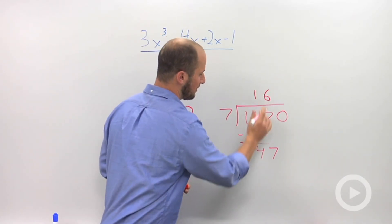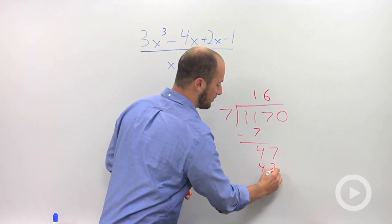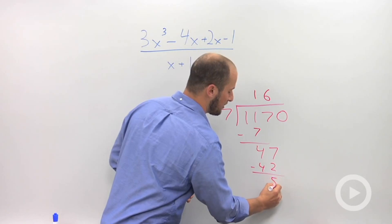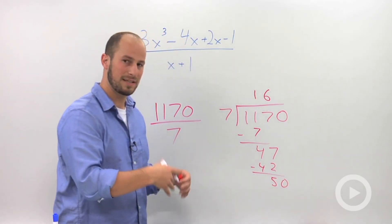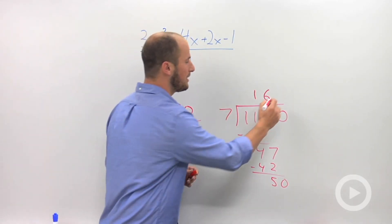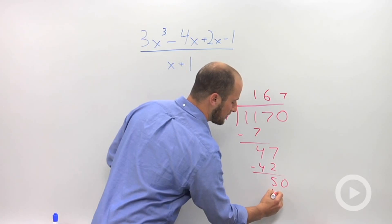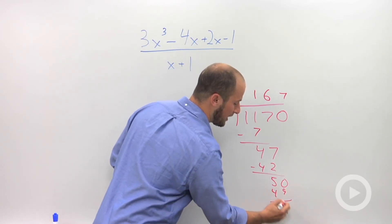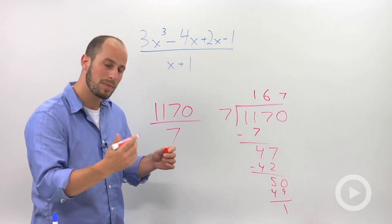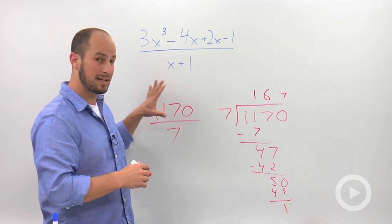This is 6, 6 times 7 is 42. Subtract again, leaving us 50. Rinse and repeat. We need 7, so this is then 49, and we are left with a remainder of 1. So we know how to divide numbers.